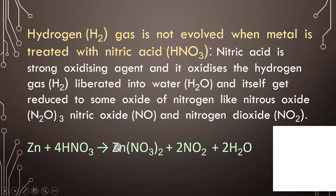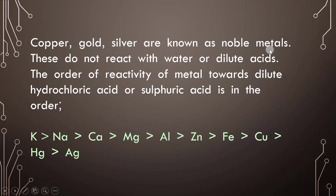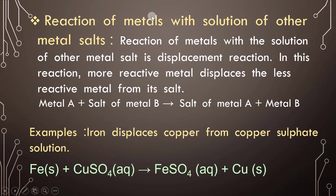Example: Zn + HNO₃ → Zn(NO₃)₂ + NO₂ + H₂O. Copper, gold, and silver are known as noble metals — these do not react with water or dilute acid. The order of reactivity of metals towards dilute HCl or H₂SO₄ is: potassium > sodium > calcium > magnesium > aluminium > zinc > iron > copper > mercury > gold.